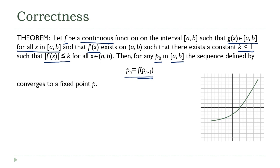We're going to start by looking at the absolute value of p_n minus p — the distance between the nth term in the sequence and the fixed point. To show convergence, I need to show that this goes to zero. Here's how: we calculate p_n by putting p_{n-1} into the function, so p_n = f(p_{n-1}). And p, the fixed point, has to equal f(p).